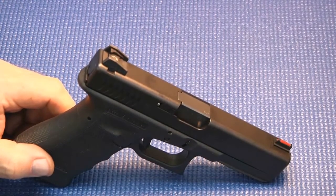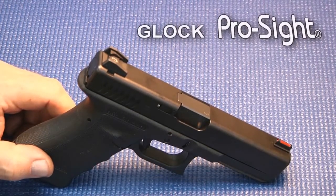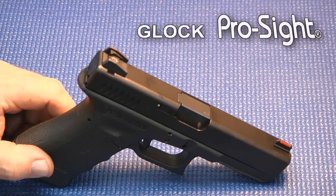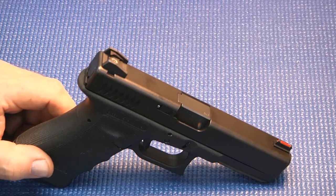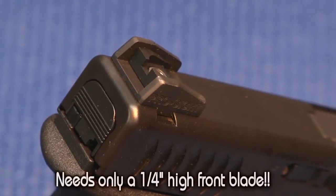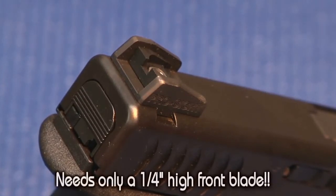This is the new combat carry sight from ProSight. It's made for Glock pistols. It's the strongest, lowest profile, fully adjustable sight made. It'll work well with any quarter-inch high front sight. You don't have to go any higher than .250 tall on a front sight.